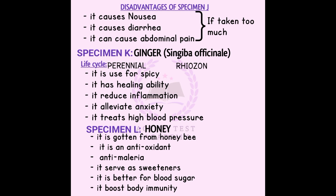Specimen K is ginger. The botanical name is Zingiber officinale. Ginger belongs to the rhizome class. It is spicy and has anti-inflammatory properties. It reduces inflammation and alleviates nausea. It helps reduce hypertension and treats high blood pressure.